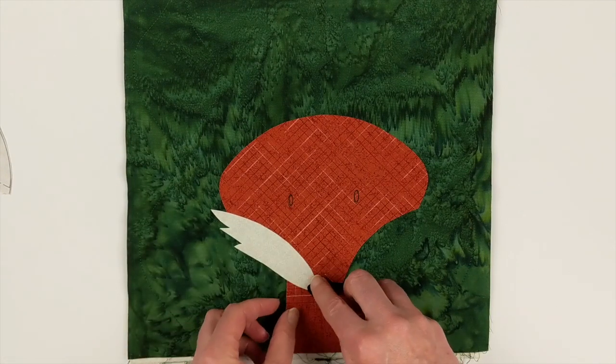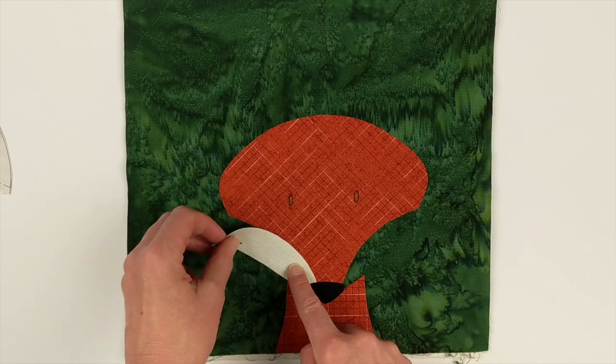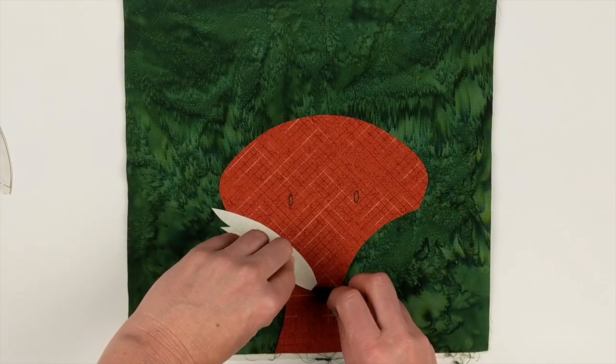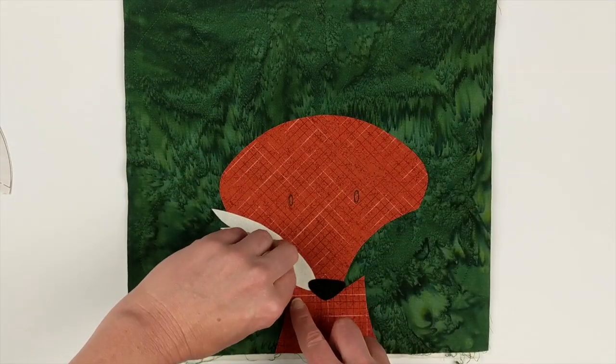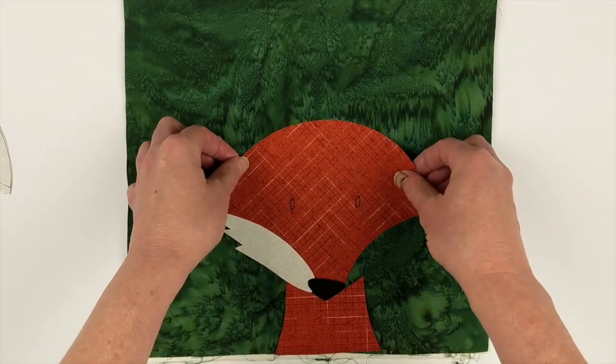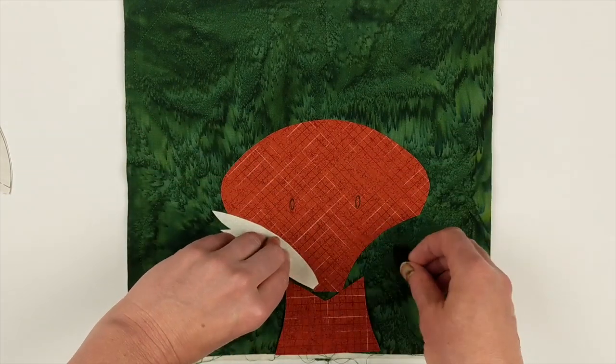So if we've got the cheeks positioned properly, and this fox is a little trickier than some of my blocks. So we want to make sure, you know what, this is barely overlapping the neck piece. So I'm actually going to push this face down a little bit more.